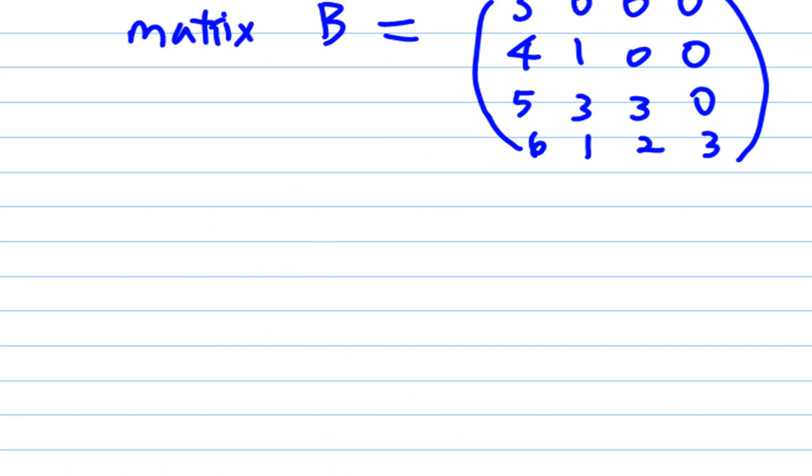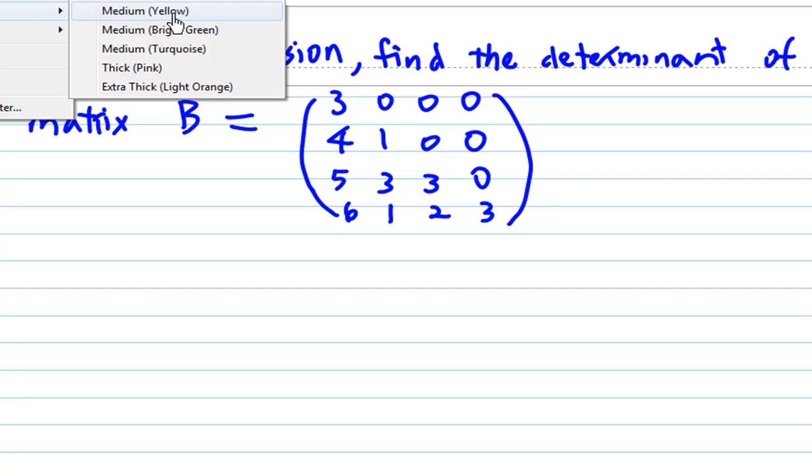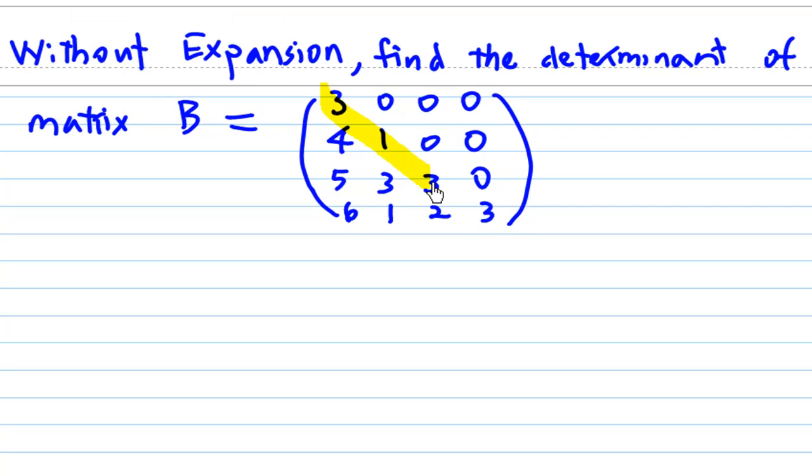So for this problem, to find the determinant without expansion, since all the non-zero entries are below the principal diagonal, the determinant is the product of the principal diagonal elements.